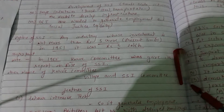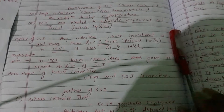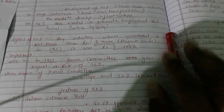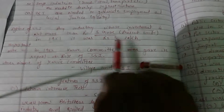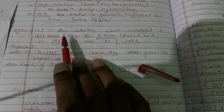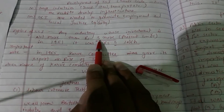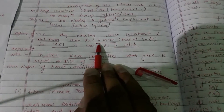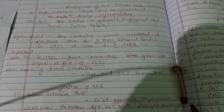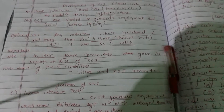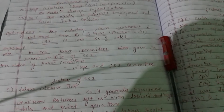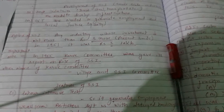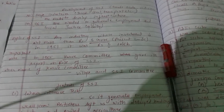Still, let me tell you clearly: any industry whose investment is not more than five crore rupees — as of today, if any industry has a capital investment of five crore or less — is counted in the small scale industry category.